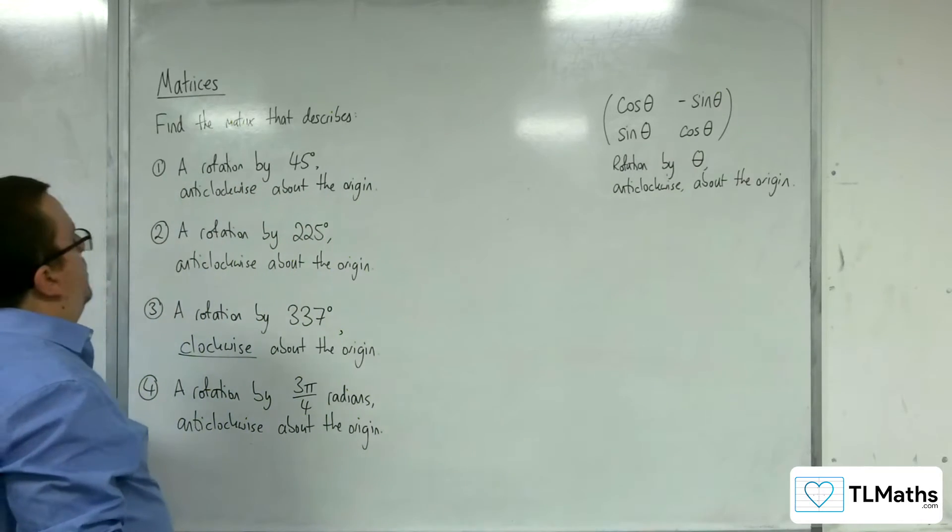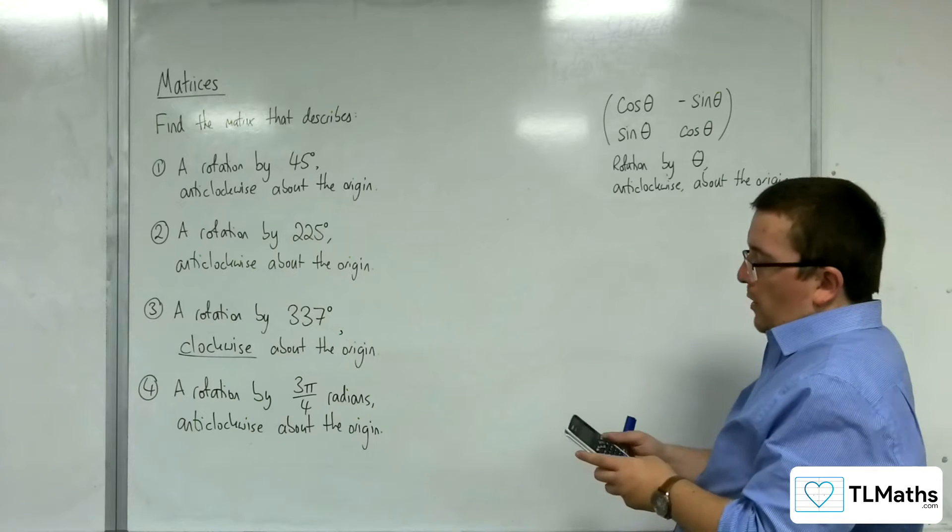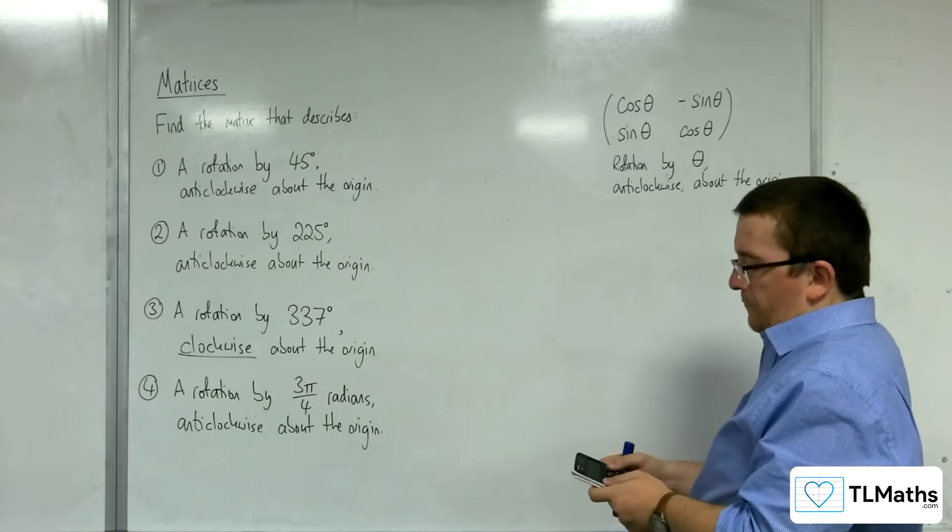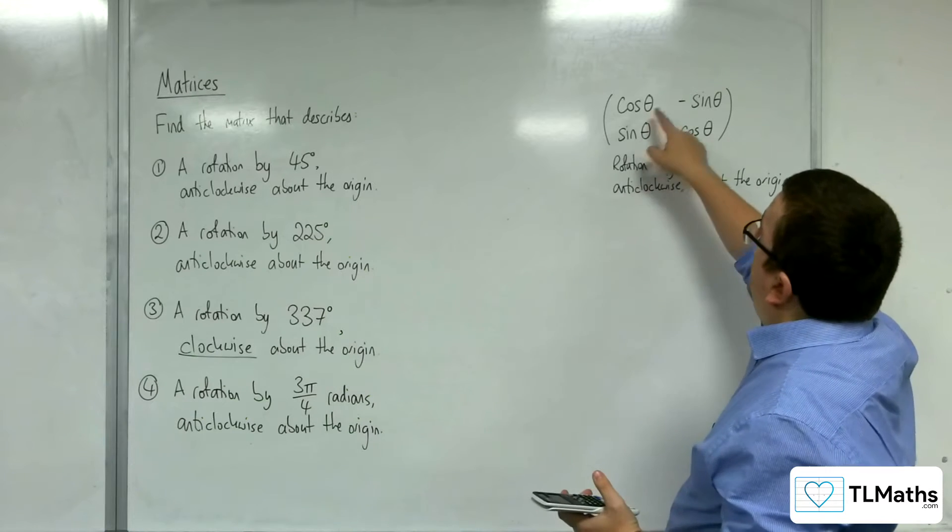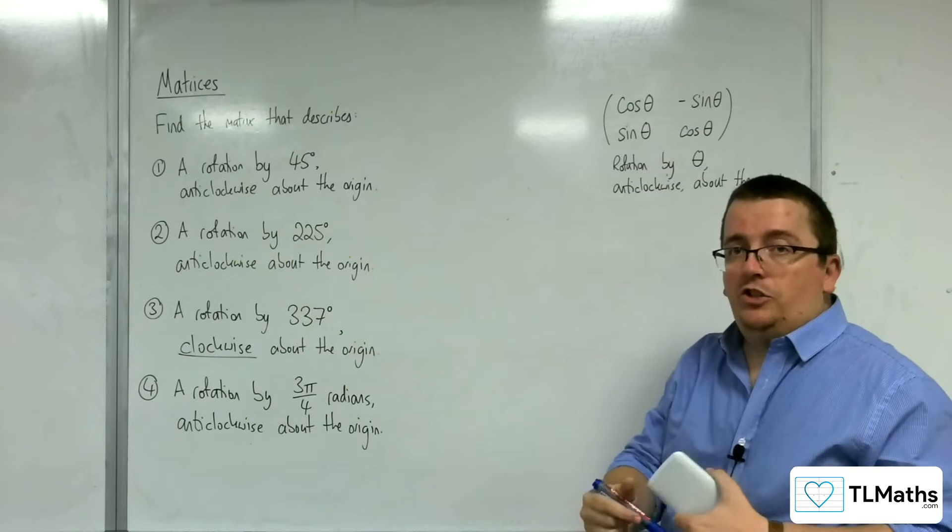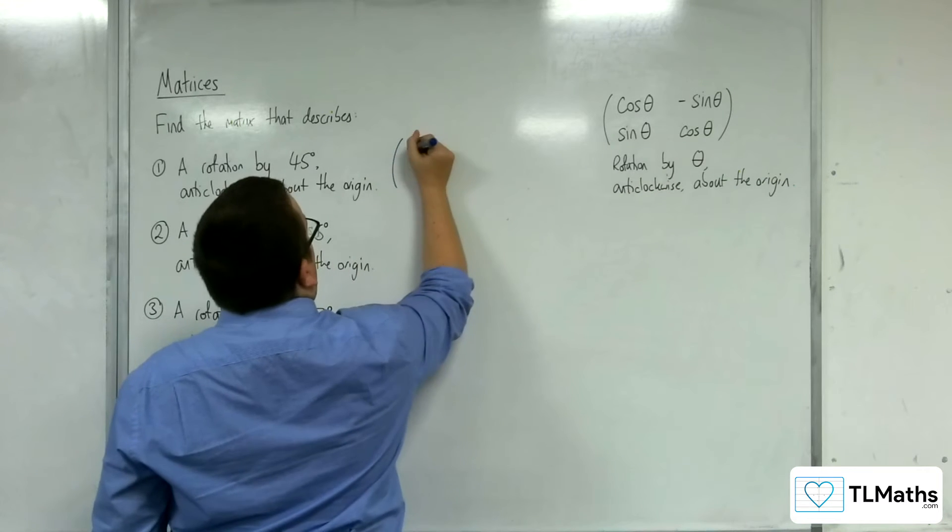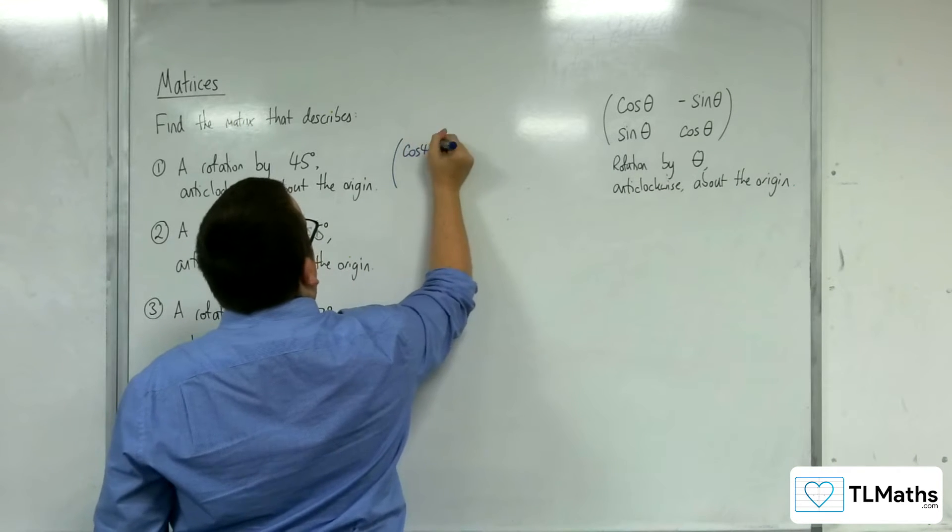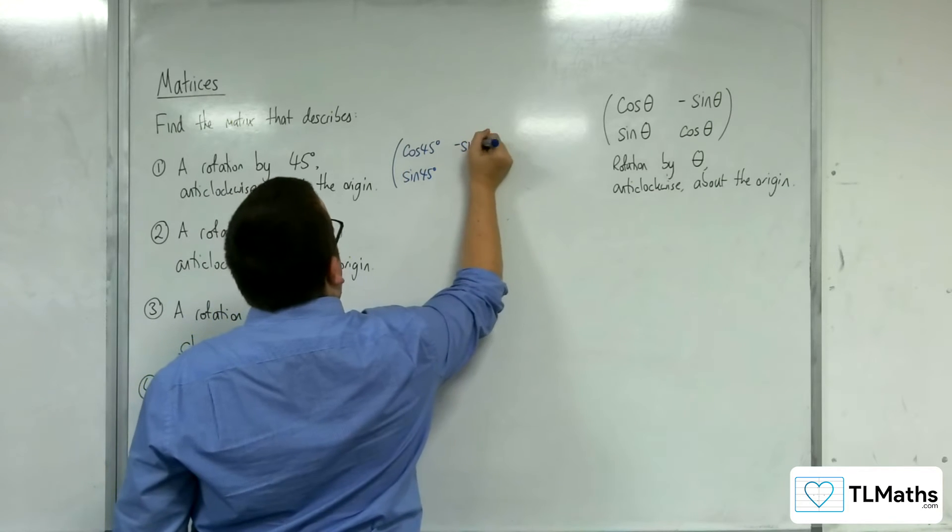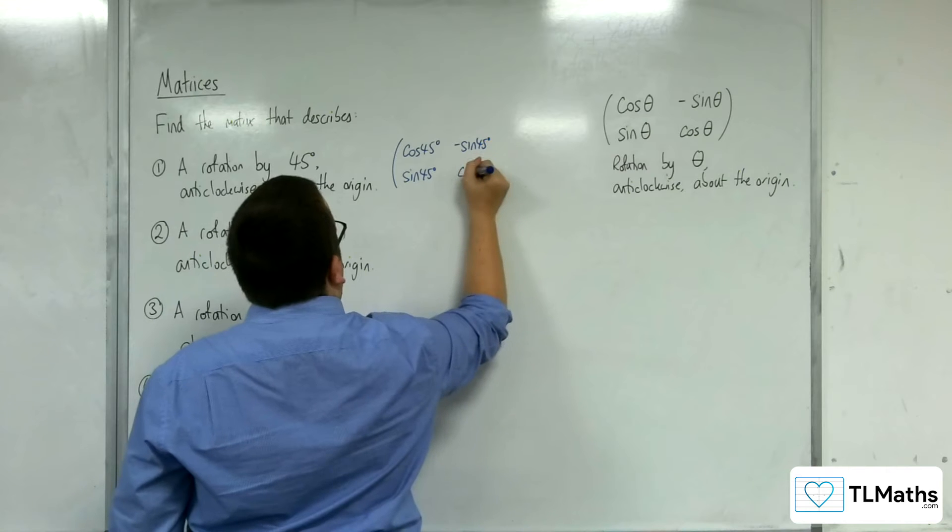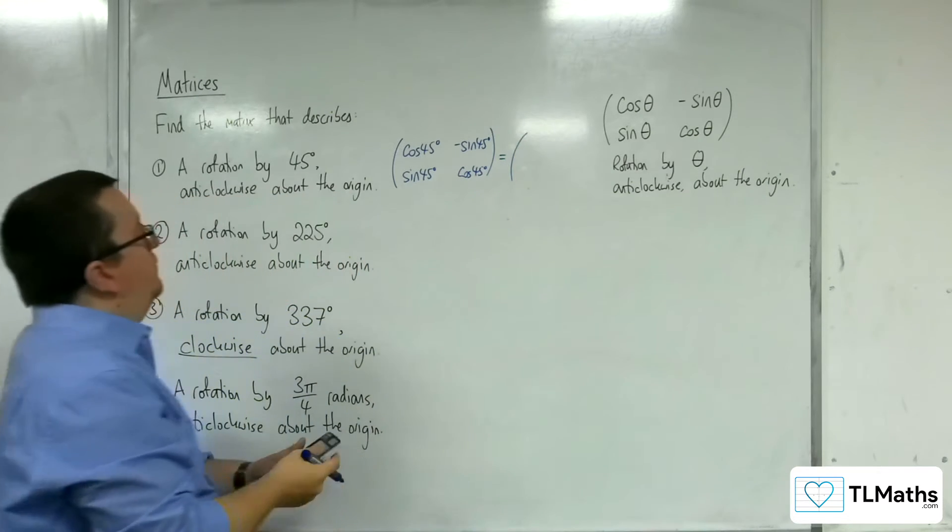So number one, a rotation by 45 degrees anticlockwise about the origin. So what we're going to do then is just substitute theta for 45 degrees into our matrix. So we're going to have cosine of 45, sine 45, negative sine 45, cosine 45.